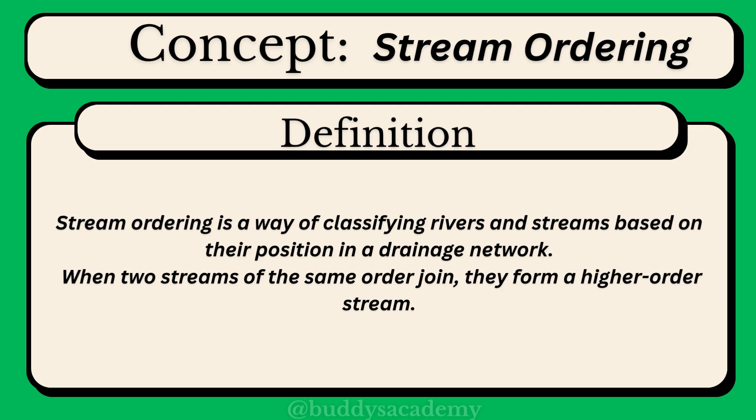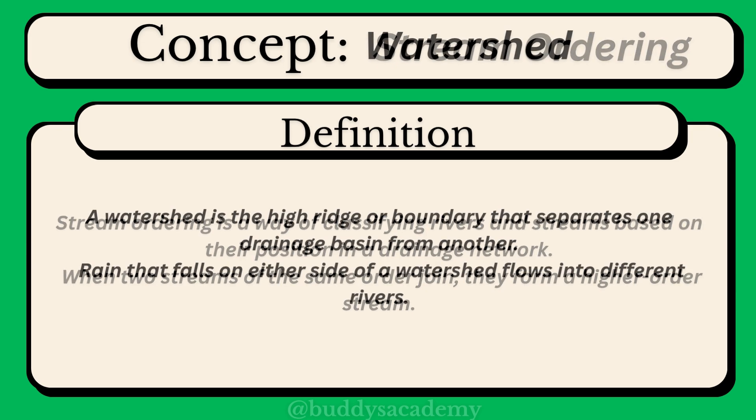Stream Ordering: Stream ordering is a way of classifying rivers and streams based on their position in a drainage network. When two streams of the same order join, they form a higher order stream.